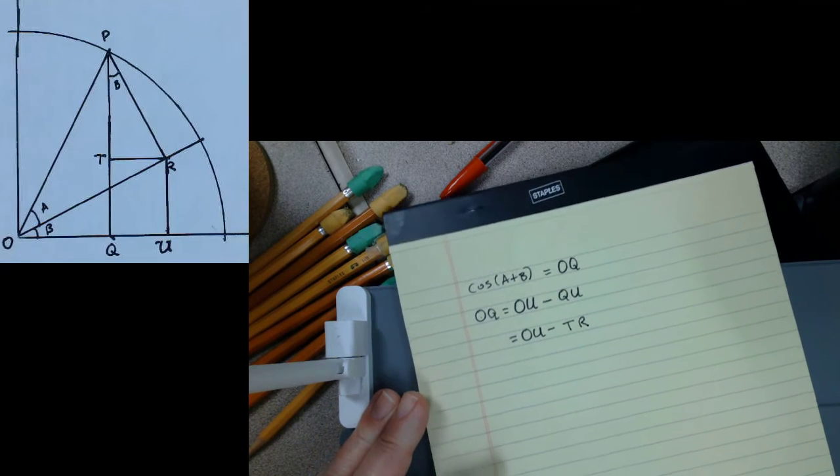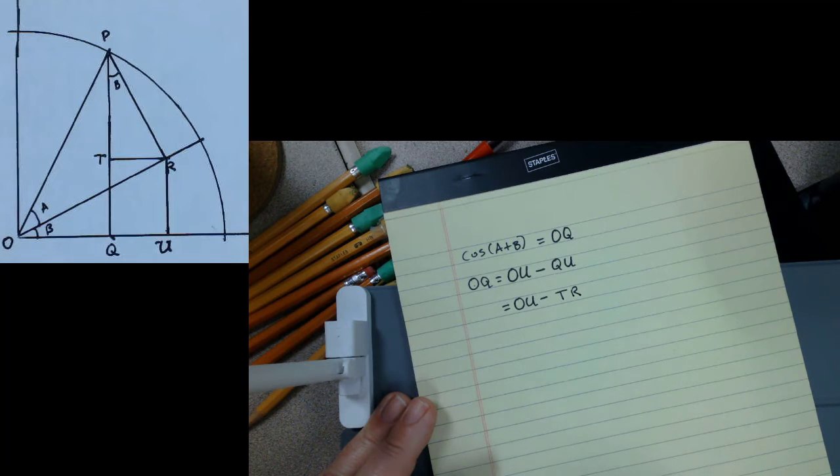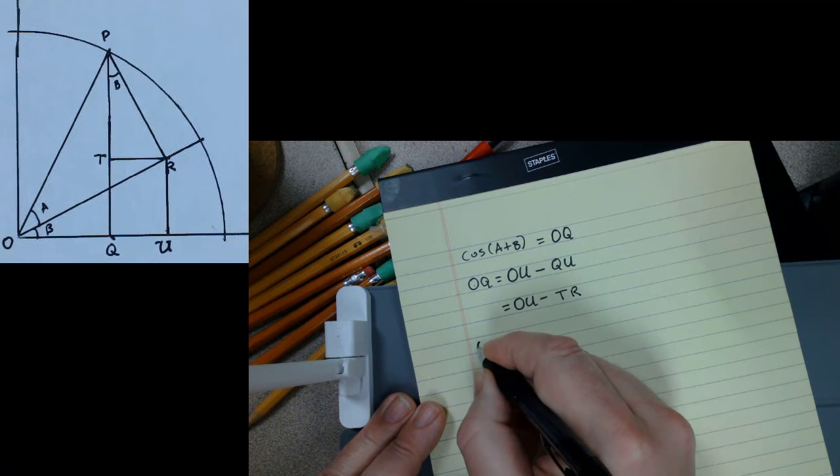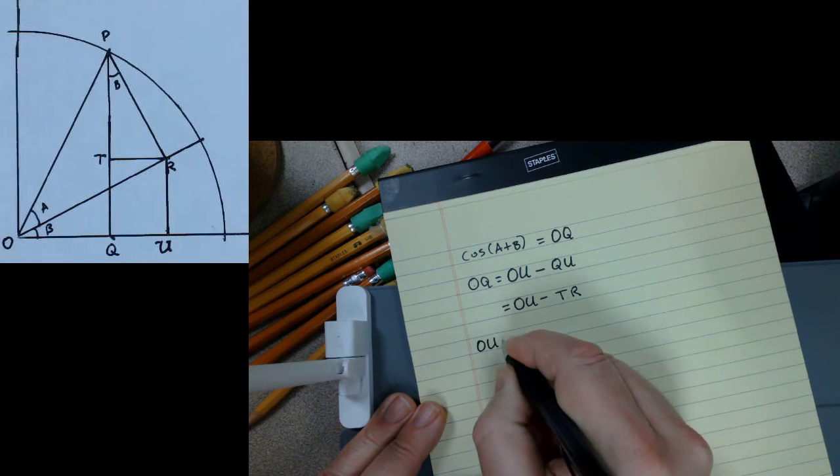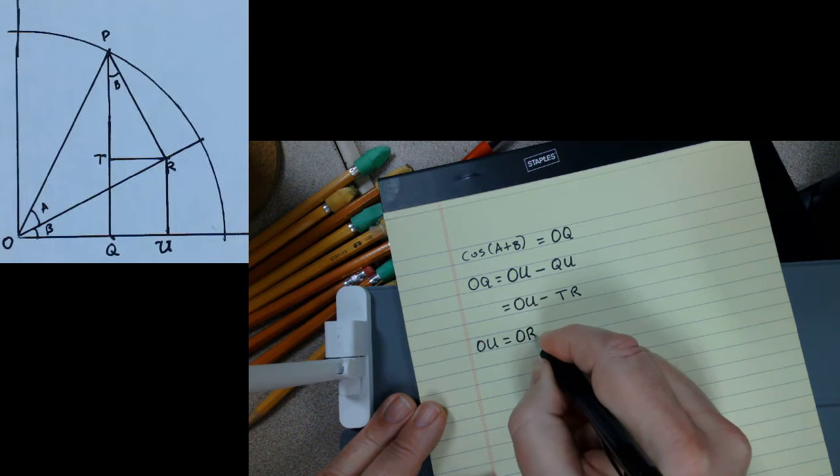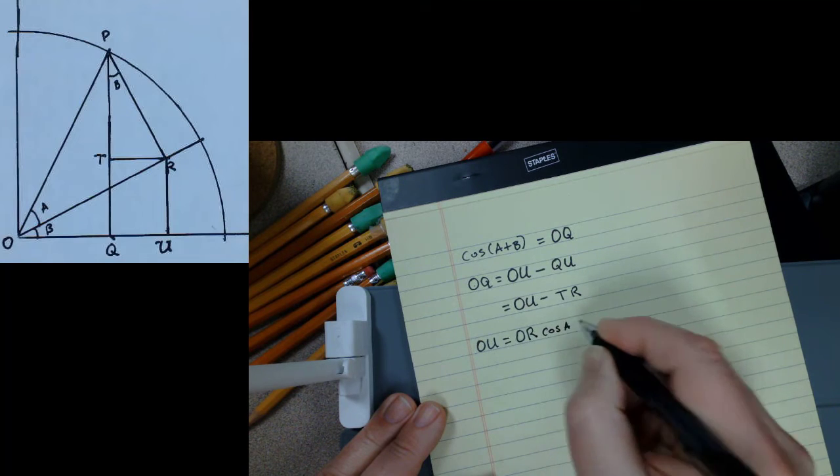Now, as I said, these triangles are drawn so that everything flows pretty nicely. I want you to see that OU is equal to the length of OR times the cosine of the angle B.